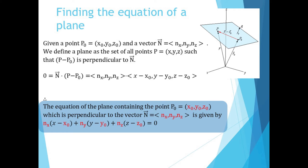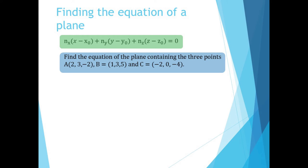So suppose we're given three points and a plane. We need a point and the normal vector. Well, we have a point — in fact, we have three of them. To get the normal vector, we just create a vector from a to b and a vector from c to a. Then we have two vectors in the plane. Taking the cross product will give us a normal vector perpendicular to the plane.